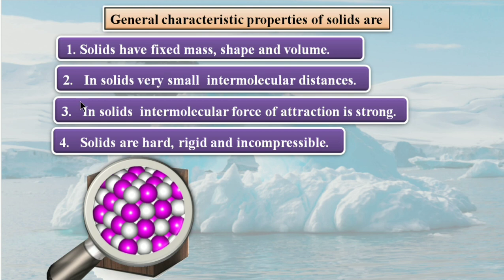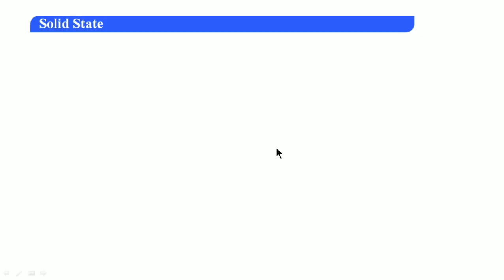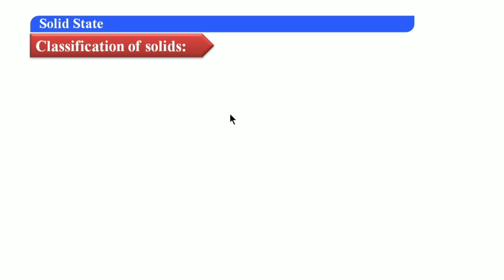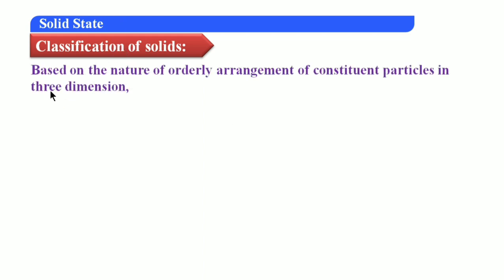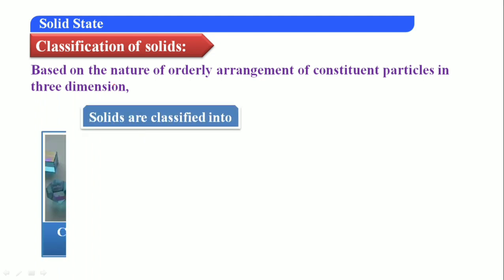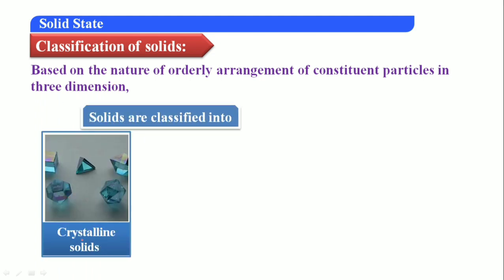Solids are hard, rigid, and incompressible — you cannot compress them very easily. Now, classification of solids: based on the nature of the orderly arrangement of constituent particles in three dimensions, solids are classified into crystalline solids and amorphous solids.